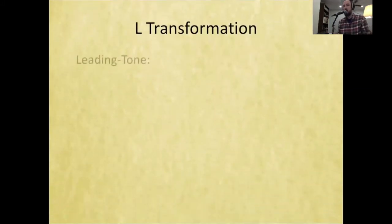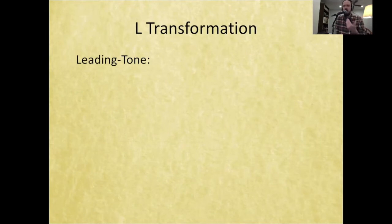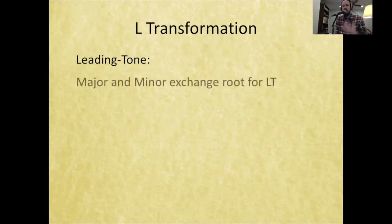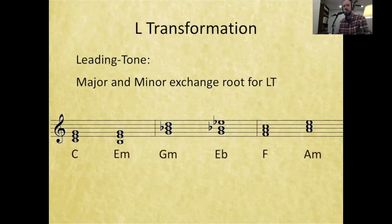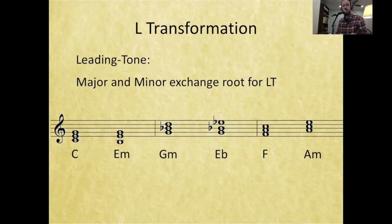The L transformation stands for leading tone. Just like parallel, there's a relationship to something familiar—we've talked a lot about leading tones, and here we're just using them in a different way. A major triad and a minor triad are going to exchange the root of the major for its leading tone. Starting with C major, the L transformation takes C major and exchanges the root C for its leading tone B, which gets us to E minor.